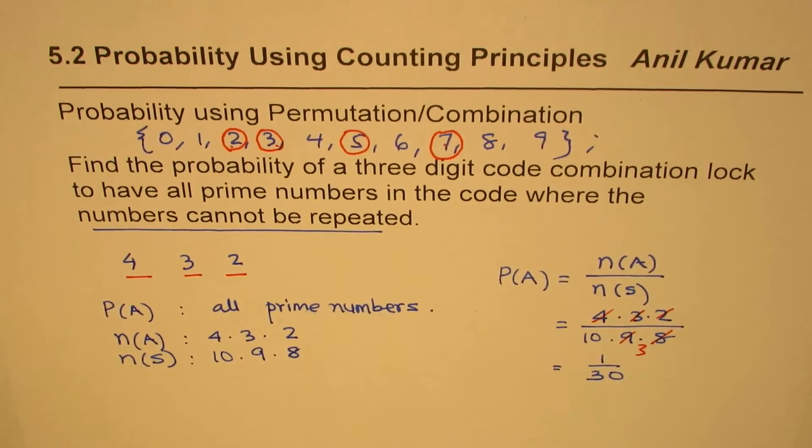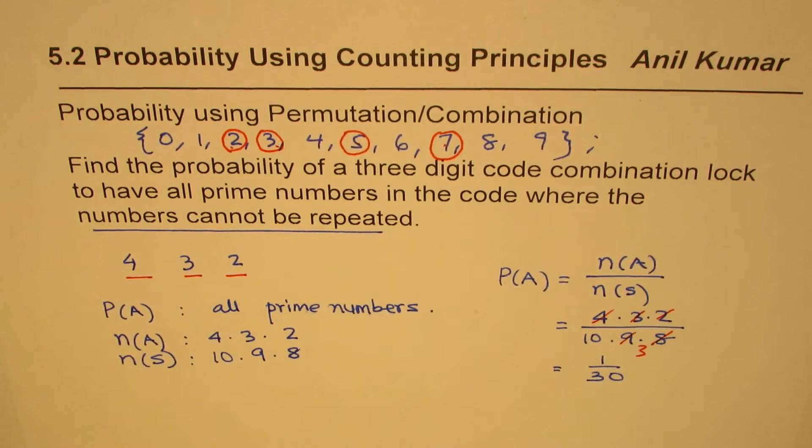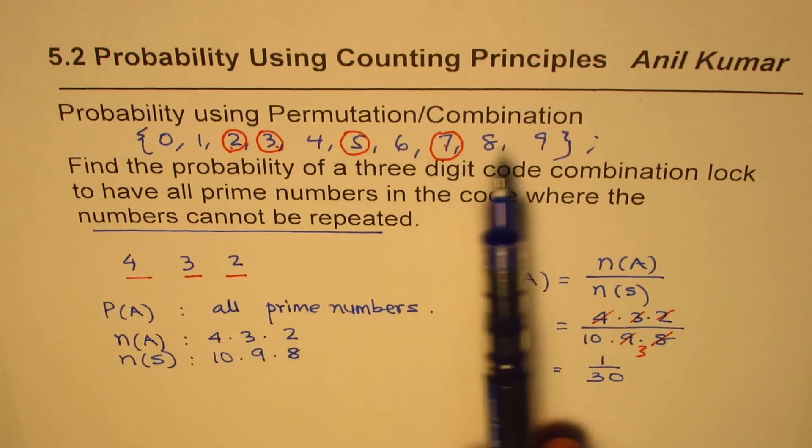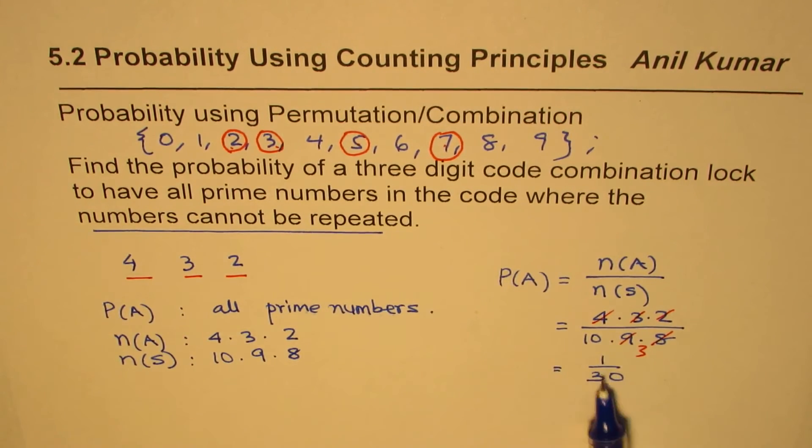So the probability of getting all prime numbers for a combination lock where the numbers are being selected from 0 to 9 is 1 over 30. I hope you understand and appreciate the method. Thank you, and all the best.